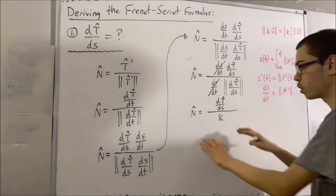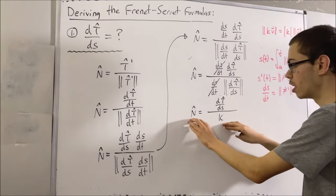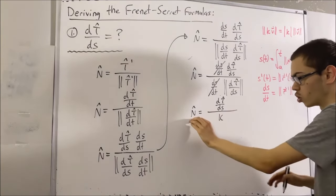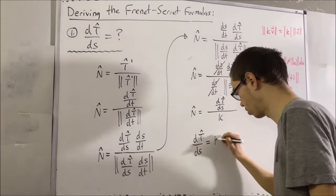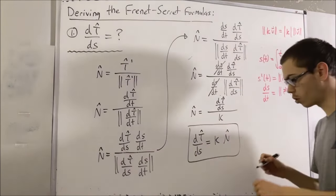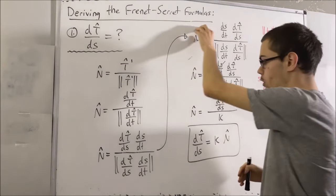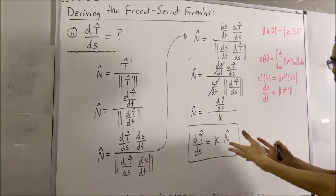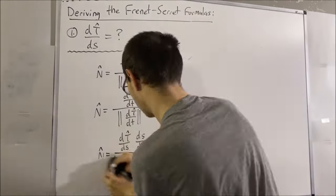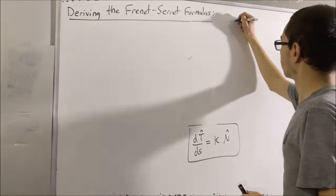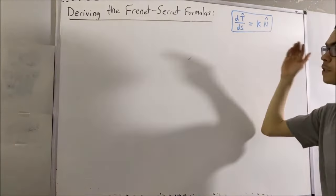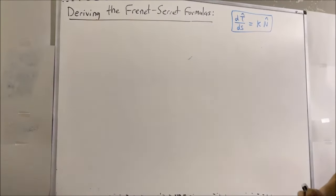Therefore, multiplying curvature on both sides, we get dT/ds equals curvature times the unit normal vector. This is the derivative of the unit tangent vector with respect to arc length — our first Frenet-Serret formula. Next, we're going to figure out the derivative of the unit binormal vector with respect to arc length.